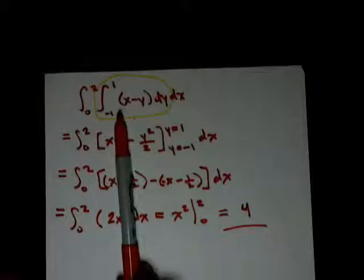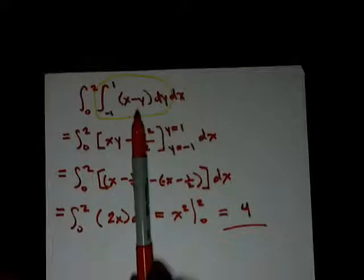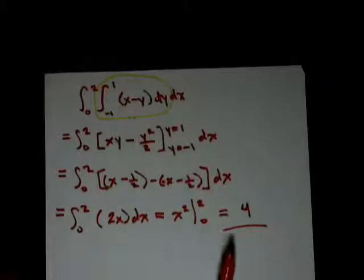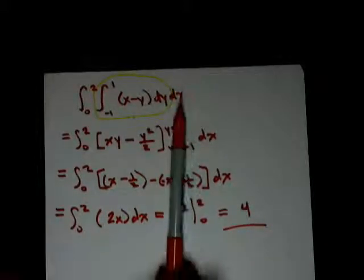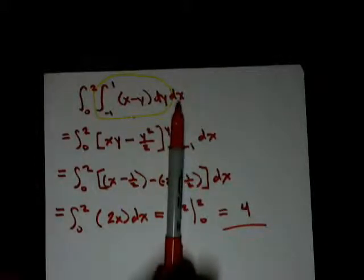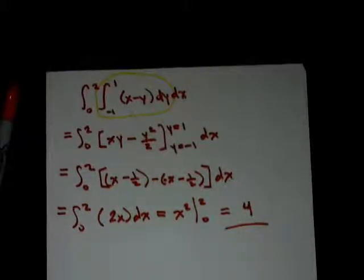So we evaluated this double integral and we used Fubini's theorem. And after we integrated both variables we get 4. And if we had chose to do x first, it's a good exercise in calculus and we should get 4. And that's how to evaluate the integral.